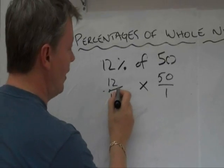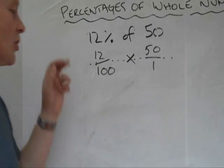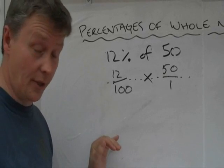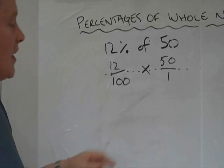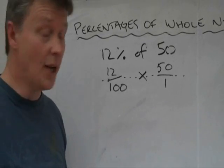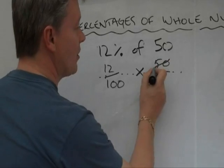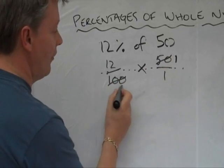Now, if you imagine that that line continues all the way across there, whatever you do to the top, you have to do to the bottom. So what I'm going to say is that I know that 50 and 100 are related, because 50 will go into 100 twice. So I can now say that becomes 1 and that becomes 2.